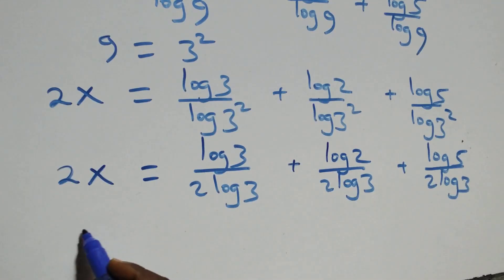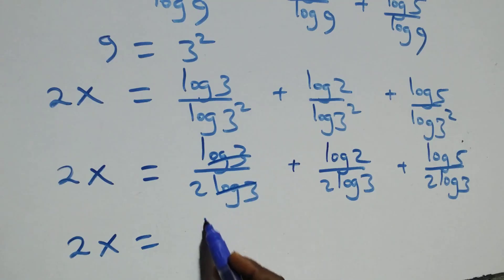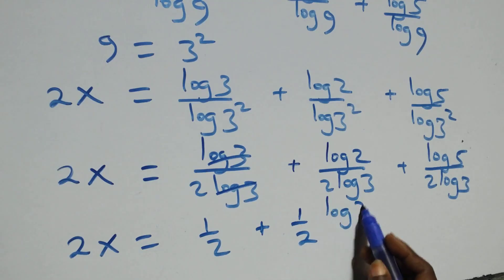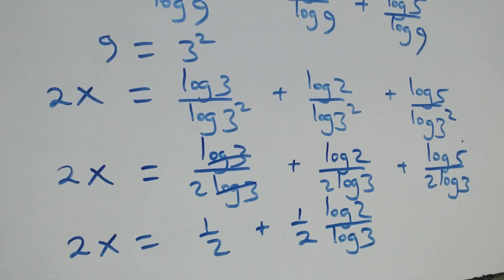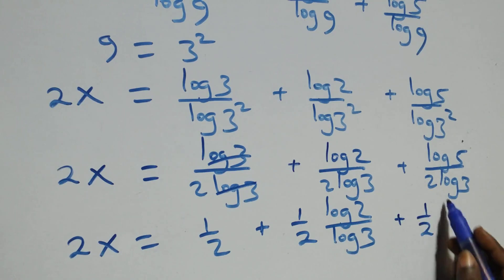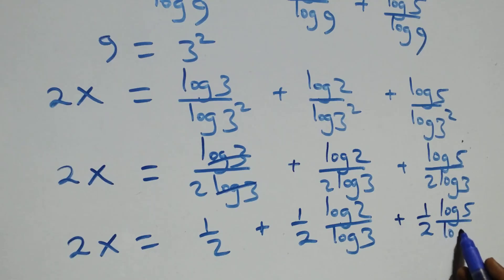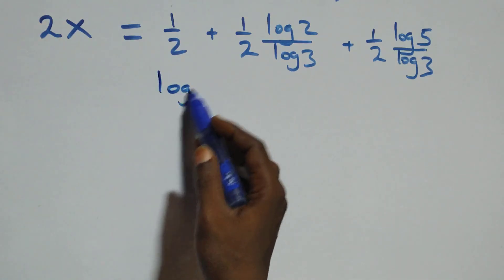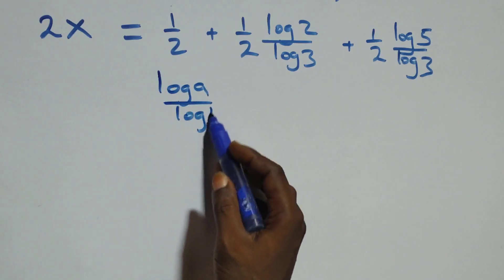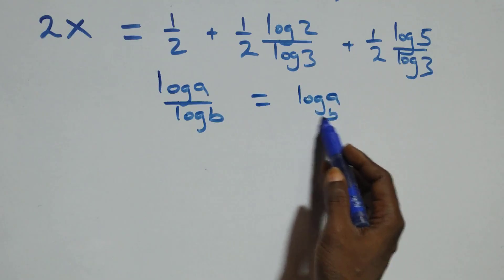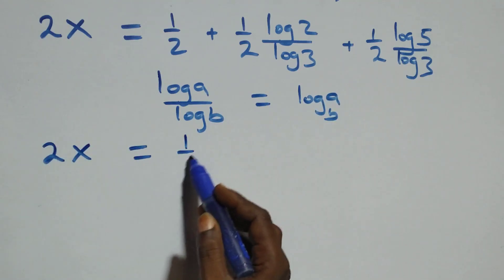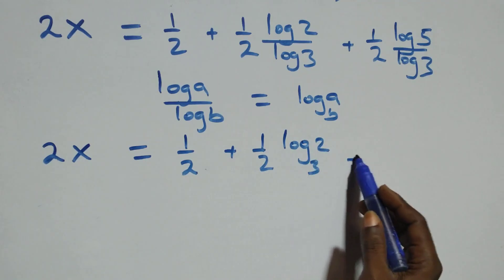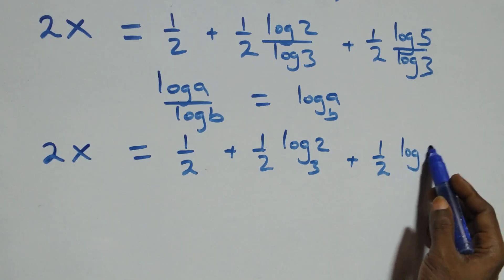Here, log 3 over 2 log 3 — log 3 cancels — giving 1 over 2. Then we can write the remaining terms as 1 over 2 times log 2 over log 3, plus 1 over 2 times log 5 over log 3. Applying change of base — log a over log b equals log a to base b — we get 2x equals 1/2 plus (1/2) log₃2 plus (1/2) log₃5.